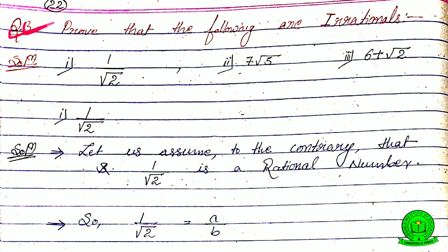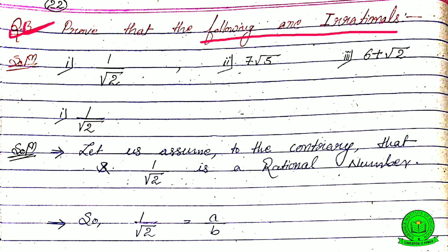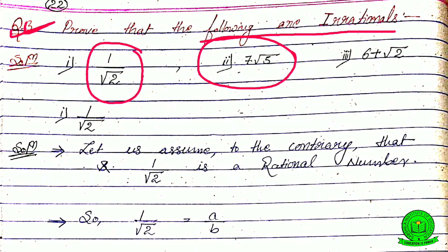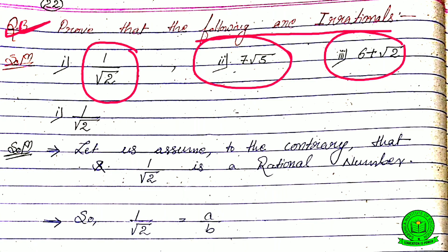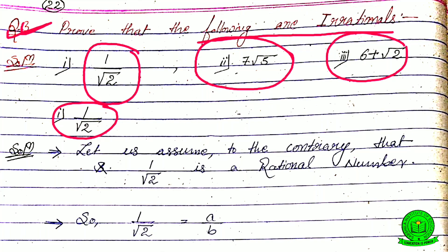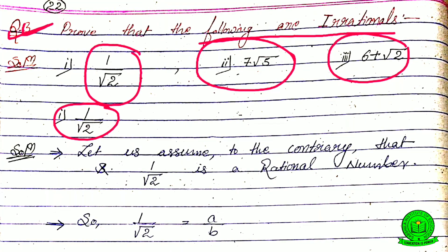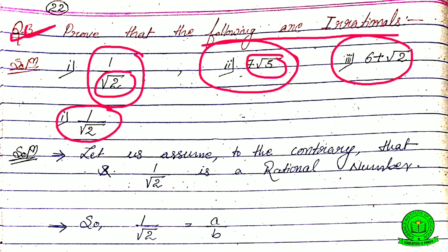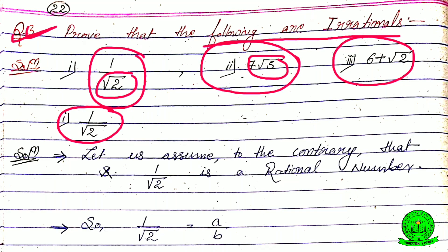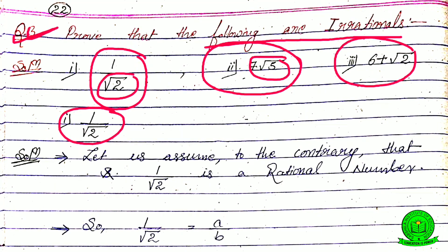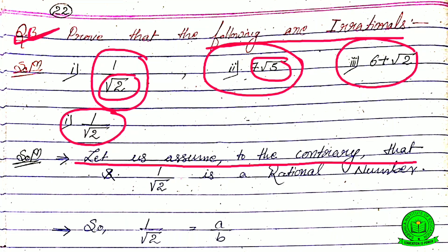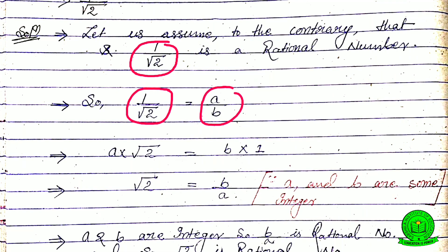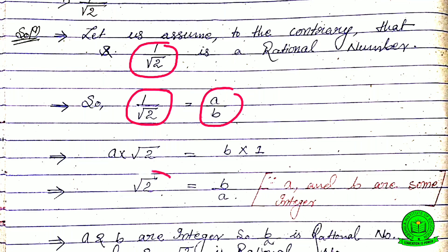Question number three has sub-questions: (i) 1 by root 2, (ii) 7 root 5, (iii) 6 plus root 2. Note: whenever you see root 2, root 5, root 3, root 7, root 11 — prime numbers under a root — they are irrational numbers. For question (i), let us assume the contrary that 1 by root 2 is a rational number, so 1 by root 2 equals a by b. By cross multiplication, root 2 equals a by b.